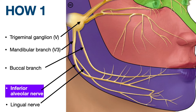A closer look at the anatomy shows us the trigeminal ganglion. From this comes the mandibular branch, which forks into two, and I've highlighted the inferior alveolar nerve in purple. Notice the offshoots from the inferior alveolar nerve, which supply individual teeth. Now let's look at how we give the ID block.